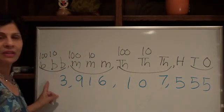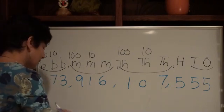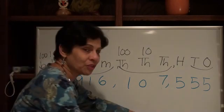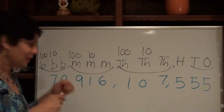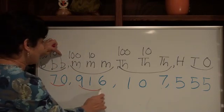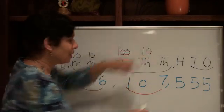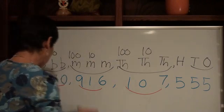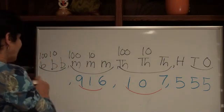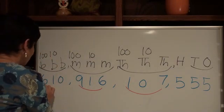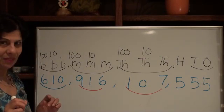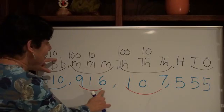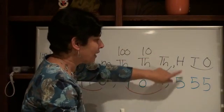How about if we increase the billions just a little more? Let's say the three goes on vacation, so now we have seventy billion. Read the number, tell the boat: seventy billion, nine hundred sixteen million, one hundred seven thousand, five hundred fifty-five. How about if we go all the way? Let's say those two went on vacation and our number is six hundred ten billion. Don't get thrown off by this number — it's the same thing: number, boat. Six hundred ten billion, nine hundred sixteen million, one hundred seven thousand, five hundred fifty-five.